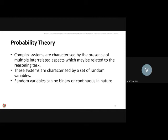The first principle behind PGM is probability theory. Complex systems will be characterized by some interrelated aspects which may be related to a reasoning task. These systems will be characterized by a set of random variables. When we look at data, the attributes or columns of a dataset are nothing but some variables, and these variables can be of two natures: binary or continuous.